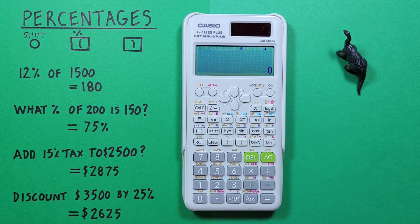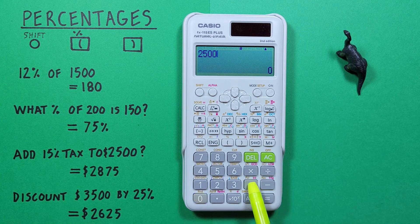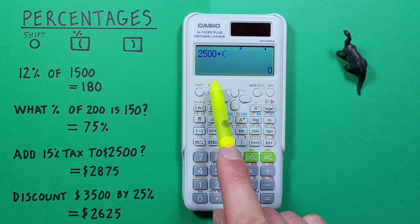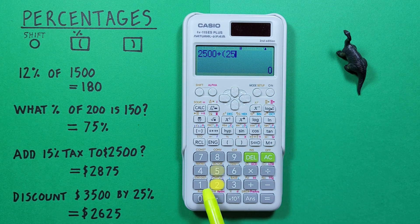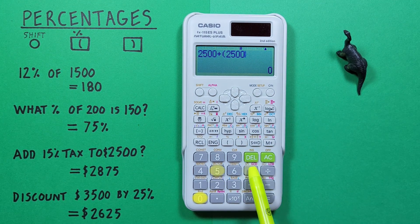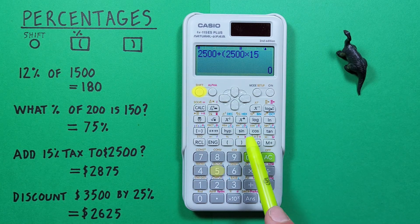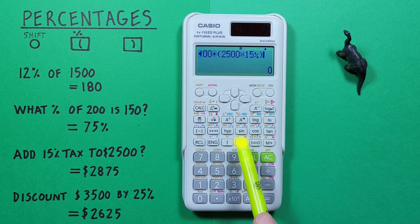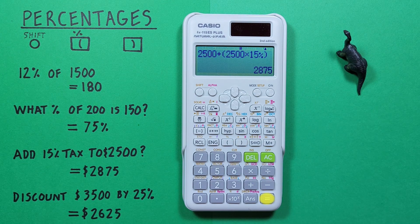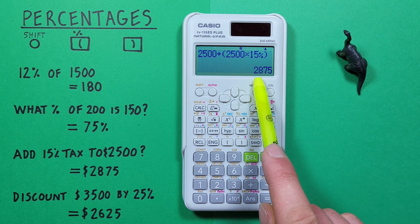If we wanted to determine this tax in one step, we enter the initial cost and then plus the left bracket, then enter our tax equation: 2500 times 15%, press shift left bracket for the percentage sign, then close those brackets and press equals. We get in one step the final cost of 2875.